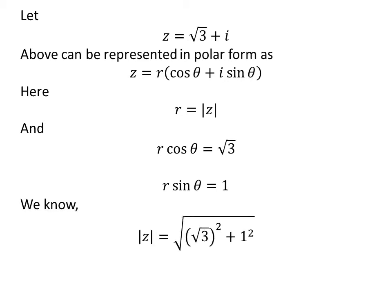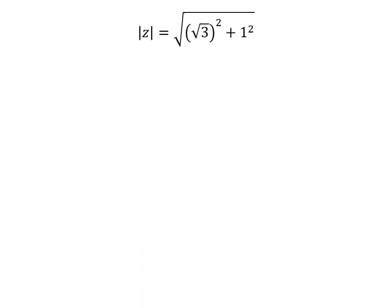By definition, |z| = √((√3)² + 1²). Since (√3)² = 3 and 1² = 1, we have |z| = √(3 + 1).